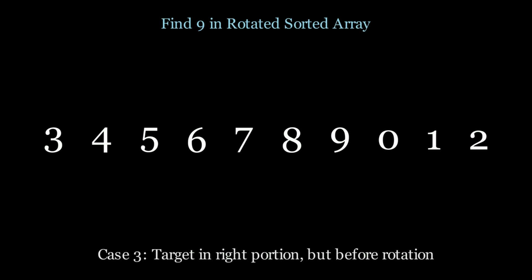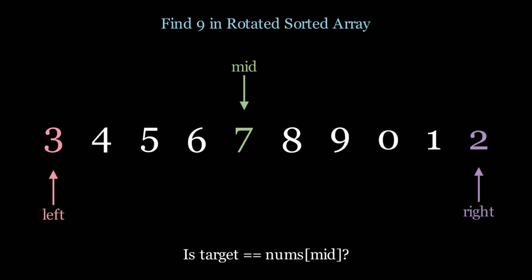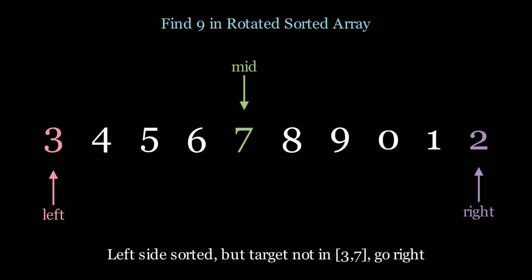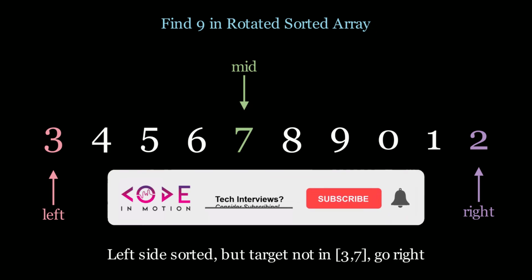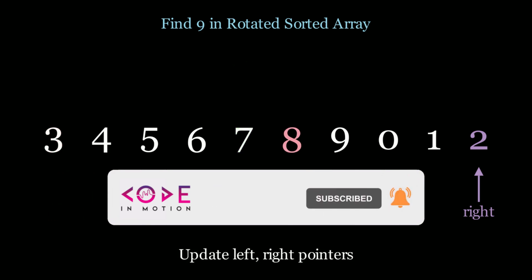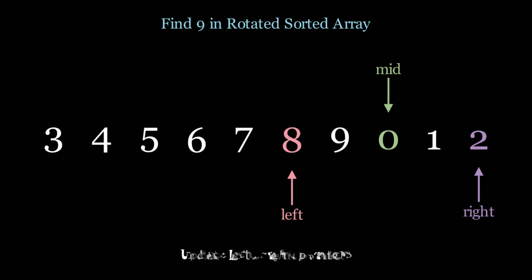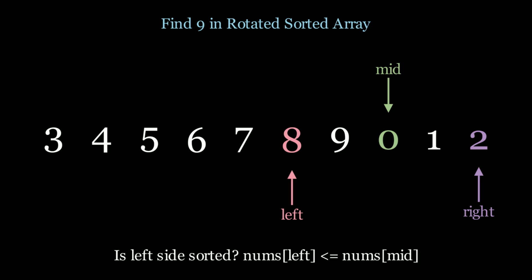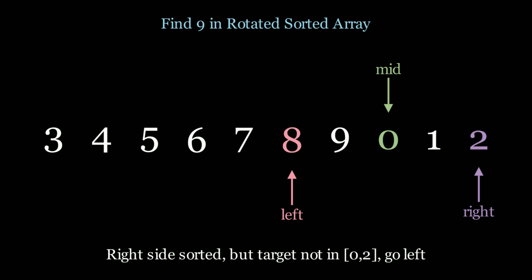Now let's look at case 3. I want to find the target 9, which is in the right position but occurs before the rotation. We initialize our left, right, and mid pointers. Is 9 equal to 7 (the mid value)? No. Is the left side sorted? Yes — 3 is smaller than 7. However, my target value 9 is not in that range, so go right. We move the left pointer and calculate mid again — mid is 0. Is mid equal to 9? No. Is the left side sorted? No — the right side is sorted, but the range is 0 to 2. Is 9 contained in 0 to 2? No. So we know the right side is sorted but our target cannot be there. Our only choice is to explore the left subarray, so we move the right pointer.